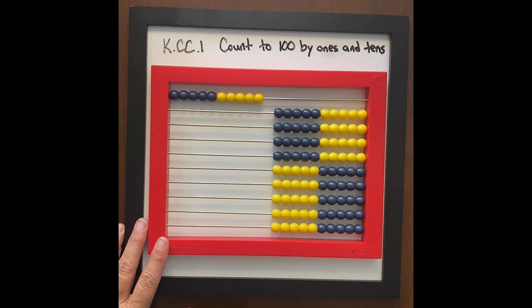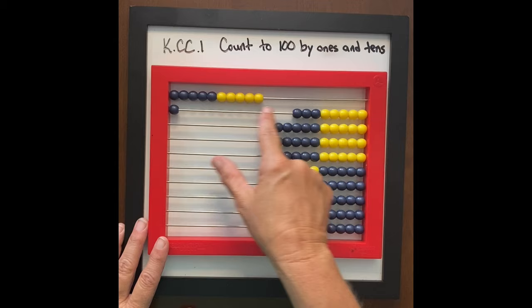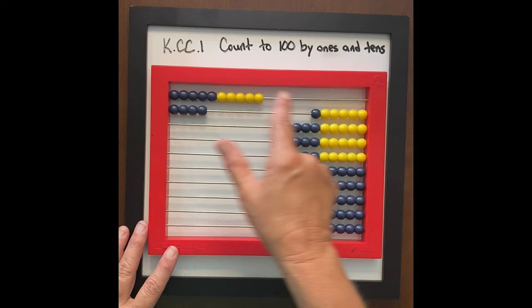So I might slide over a whole group of 10 — how many do I have? 10. And then I'm going to say, let's count by ones: 11, 12, 13. Or the way I would count it is: 1, 10, 3.